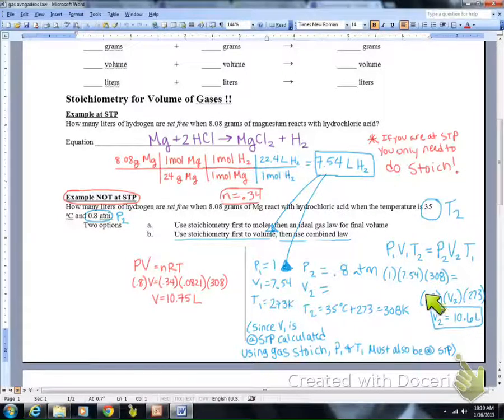I get practically the same thing. I got 10.6 here, 10.75 here. Rounding errors and all of that stuff accounts for that difference, so it's relatively equal, and equal enough for us to be able to use either version for finding liters not at STP.